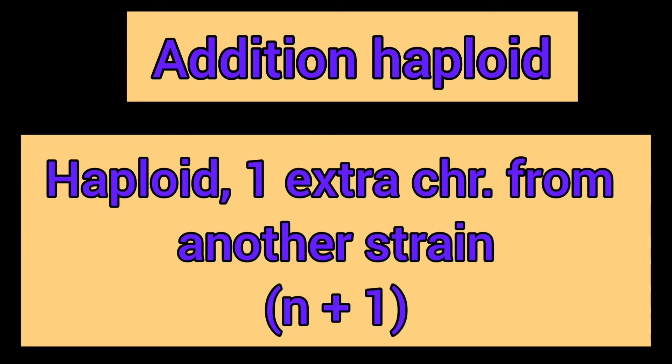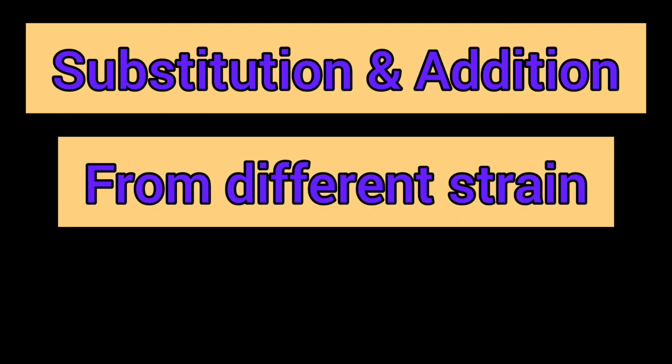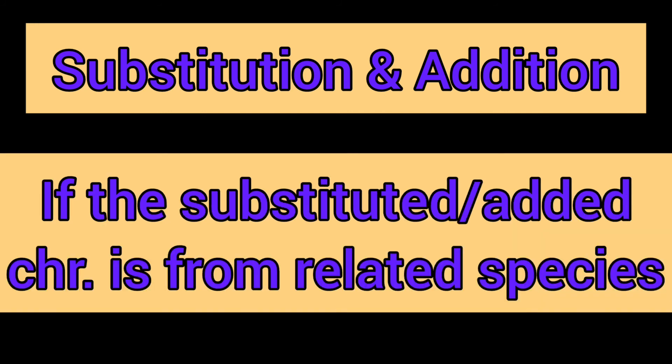An addition haploid is a haploid having an extra chromosome from another strain, represented as n plus one. In the case of both substitution and addition haploids, the additional or substituted chromosome is from the same species — just a different strain, so the chromosome number relationship holds.